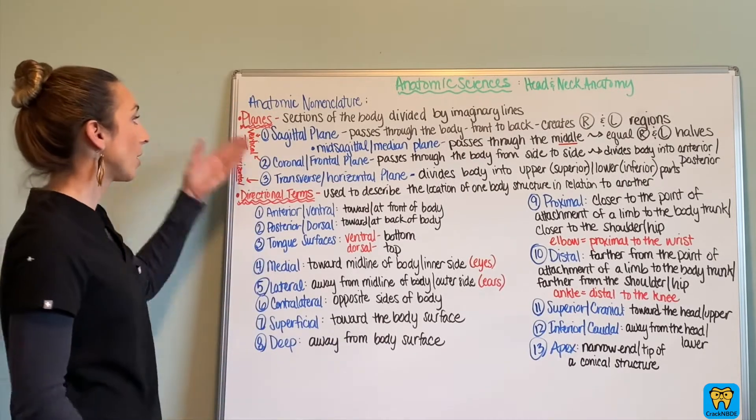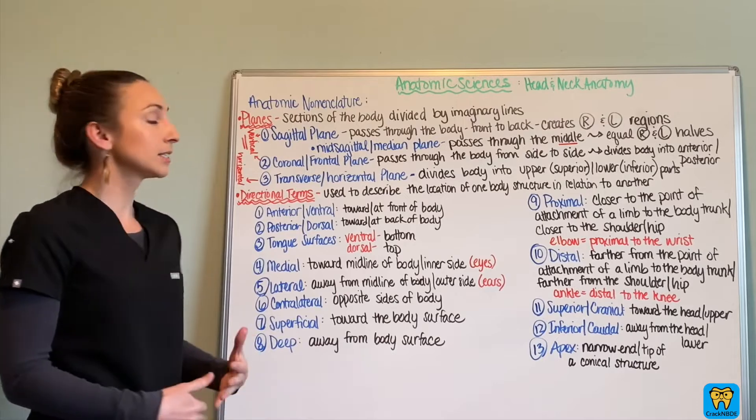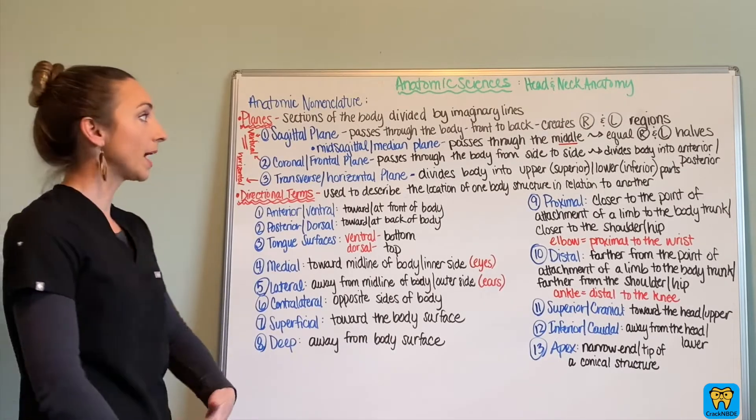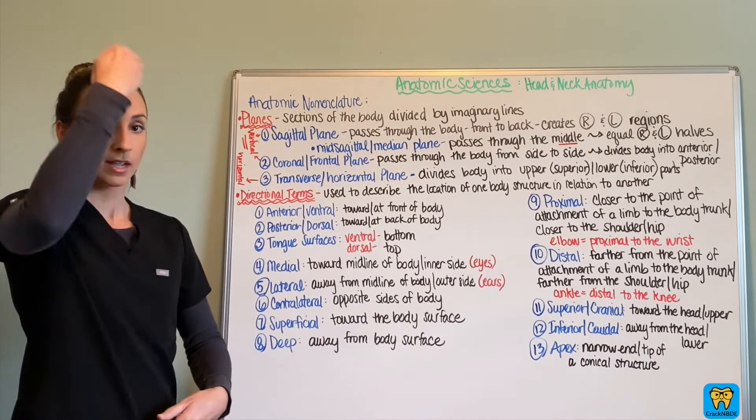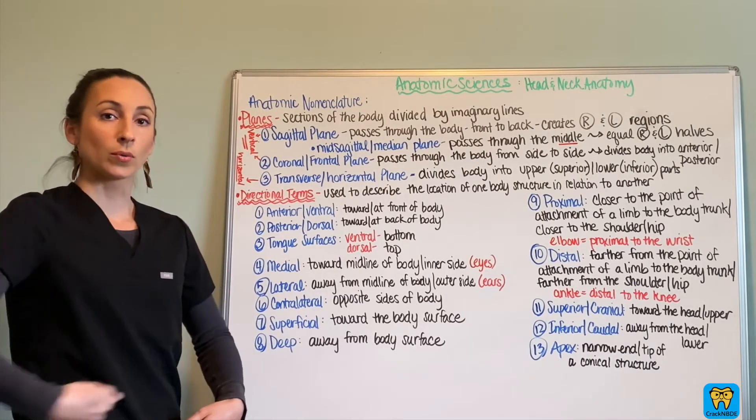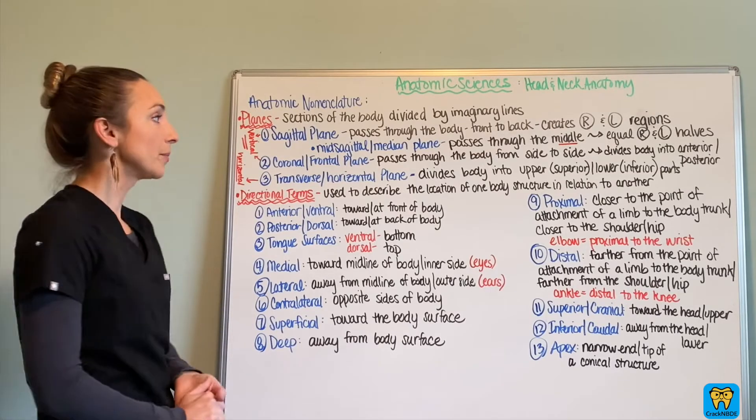So first off, we have our planes. Planes are how our body is divided. We're imagining a line either going down the center of your body, or we have it also horizontally through the body.